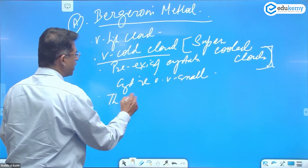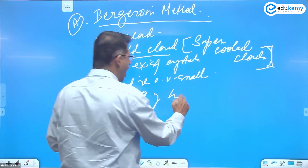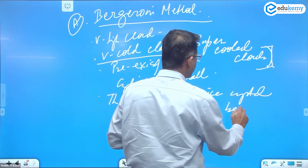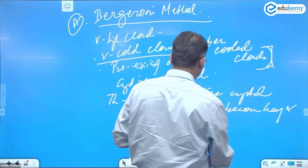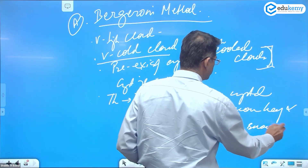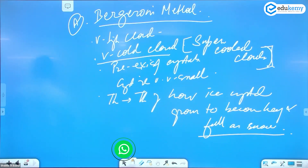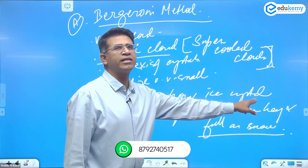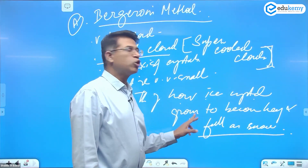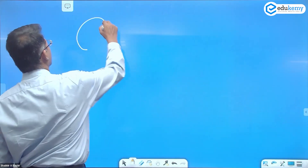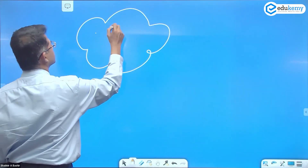Bergeron's theory is about how ice crystals grow to become heavy and fall as snowfall. The theory is about how ice crystals grow to become heavy and then fall as snow. Essentially, a cloud has water droplets, water vapor in gas form, and also certain ice crystals.